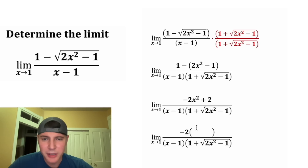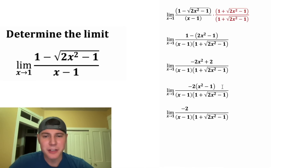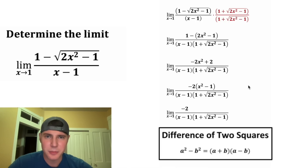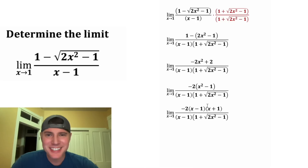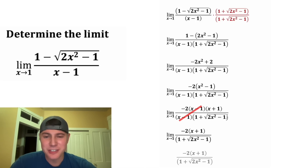Let's factor out −2 from the numerator. −2 times x² is −2x², and −2 times −1 is +2, so the numerator becomes −2 times (x²−1). Now x²−1 is a difference of two squares: a²−b² = (a−b)(a+b), so x²−1 = (x−1)(x+1). The (x−1) on top and (x−1) on the bottom cancel each other out. We're left with the limit as x approaches 1 of −2(x+1) over the conjugate.